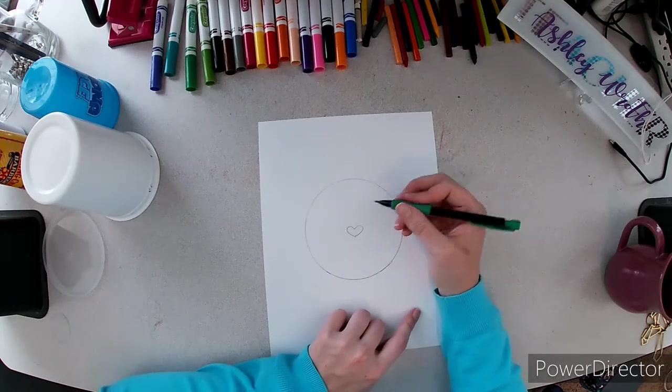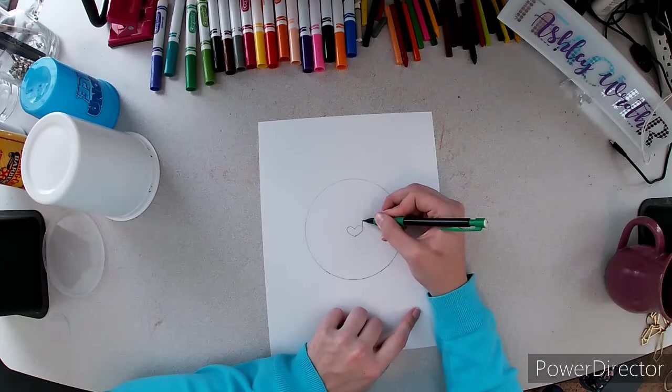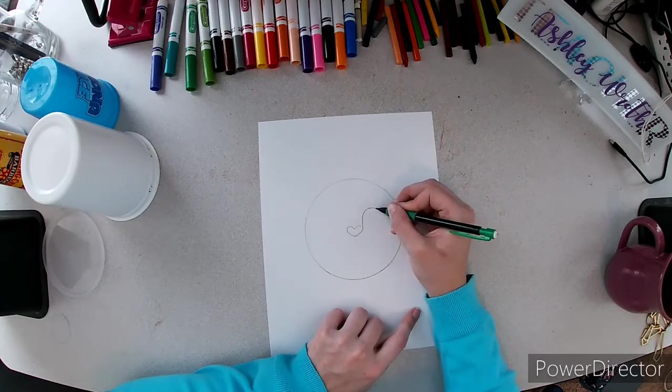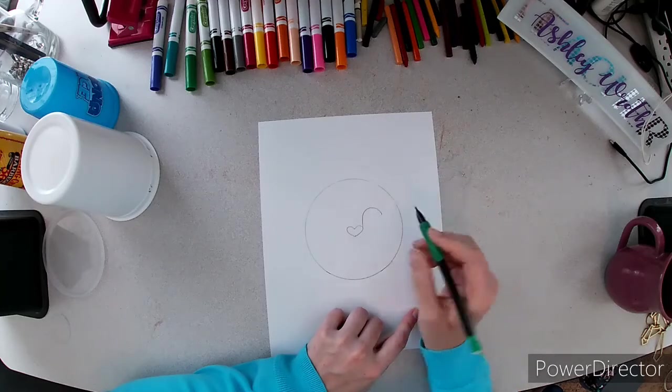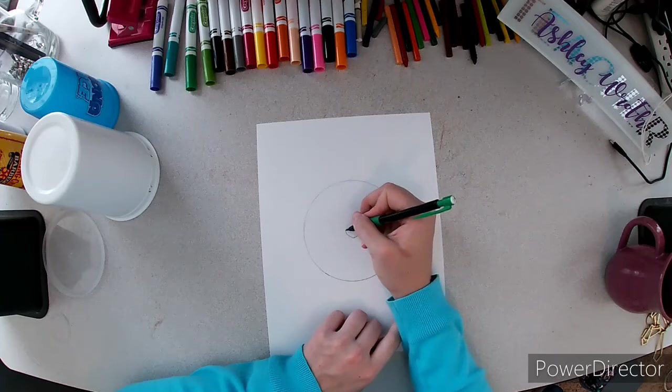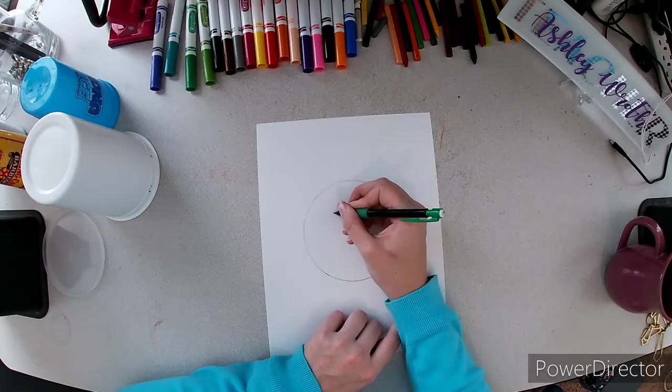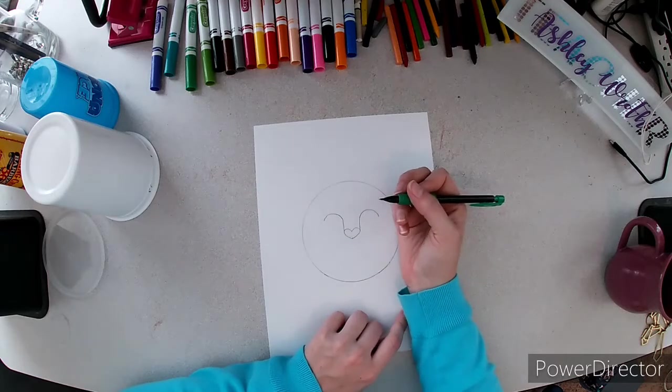Then next from the side of this heart we're going to go up and around like a candy cane and remember you want to make it pretty big. Then on the same thing on the other side up and around and back down.